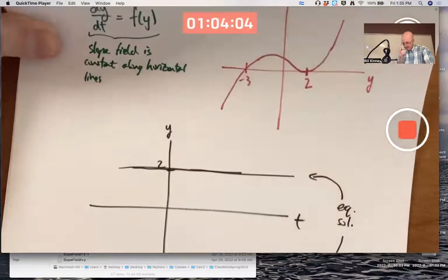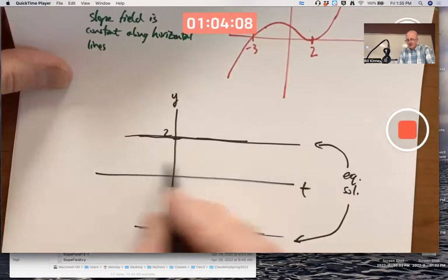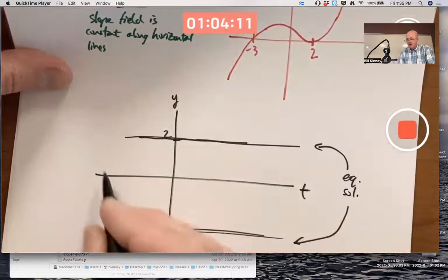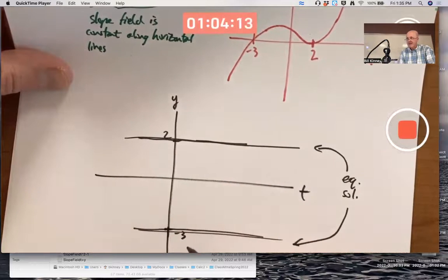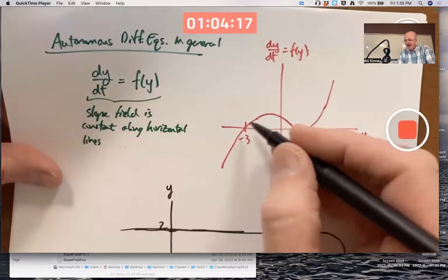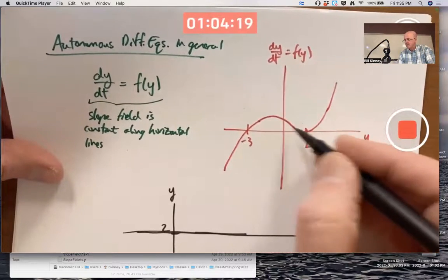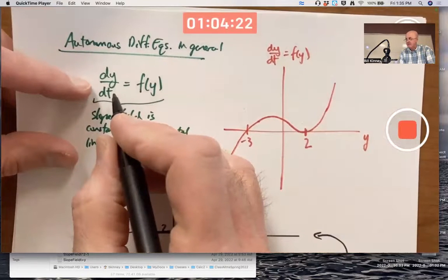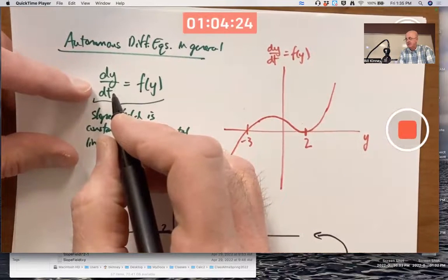How would you draw the rest of the slope field? What if you're trying to draw slope marks in this region here where y is between negative 3 and 2? Because this graph is positive between negative 3 and 2, that means dy/dt is positive when the initial condition is between negative 3 and 2.